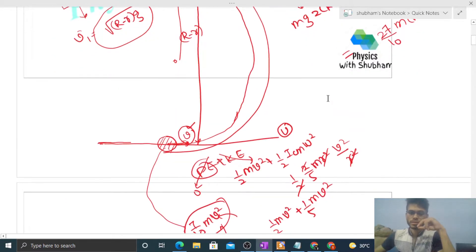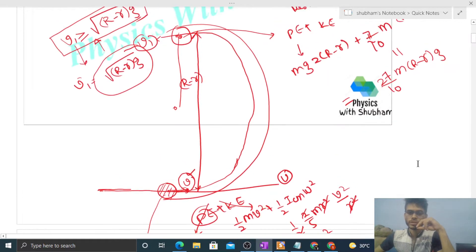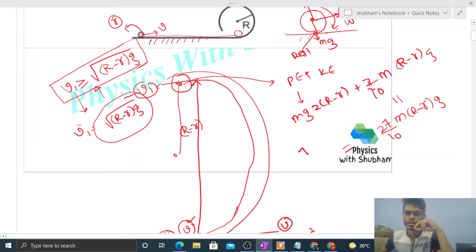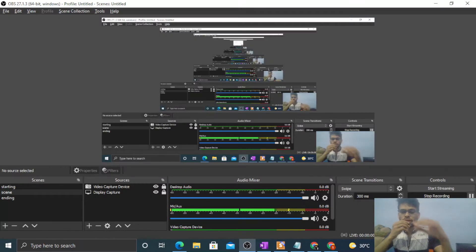7 by 10 of m into v square. So from here we have to find out the value of v. So m and m cancel, right? And 10 and 10 cancel. So v is equal to under root of 27 by 7 into capital R minus small r into g. So I think you have understood. Let me know if you still have any confusion, we can discuss further. Okay guys, keep working hard. Best of luck. Bye.